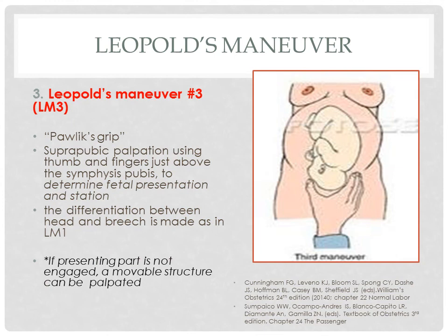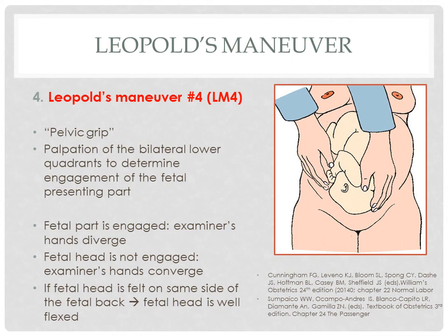Leopold's maneuver 3 or LM3, also called the Pawlik grip, is suprapubic palpation using the thumb and fingers just above the symphysis pubis to determine fetal presentation and station — which fetal part is foremost in the birth canal. Differentiation between head and breech is made as in LM1. In this picture, LM3 is cephalic. LM4, or the pelvic grip, is palpation of the bilateral lower quadrants to determine engagement. If the fetal part is engaged, the examiner's hands diverge; if not engaged, the hands converge. In this picture, LM4 is reported as fetus not engaged.